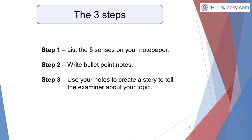There are three steps to planning your talk. With only one minute to get this done you need to begin right away — having a strategy will help you to do this. The three steps are: step one, list the five senses on your notepaper; step two, write bullet point notes; step three, use your notes to create a story to tell the examiner about your topic. You'll be given paper for making your notes and will be allowed to look at it while you're talking.